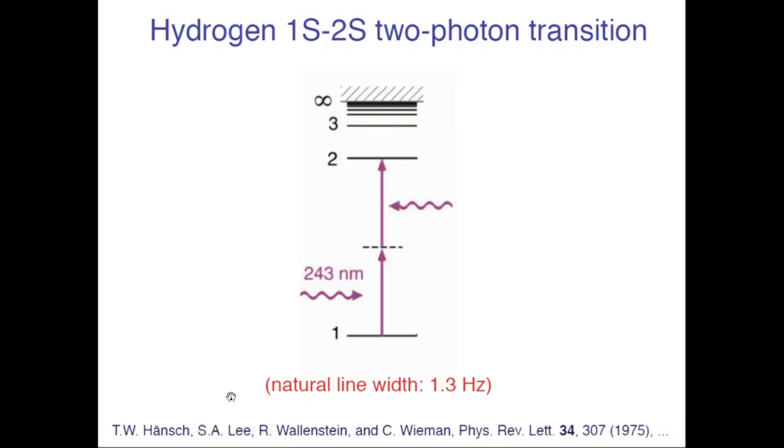There is a particularly sharp resonance in hydrogen that we have spent a great deal of time on, a two-photon resonance from the ground state to the metastable 2S state that you can excite with ultraviolet light. The natural linewidth should only be about one hertz, whereas the optical frequency is on the order of 10 to the 15 hertz. You can suppress Doppler broadening, at least to first order.